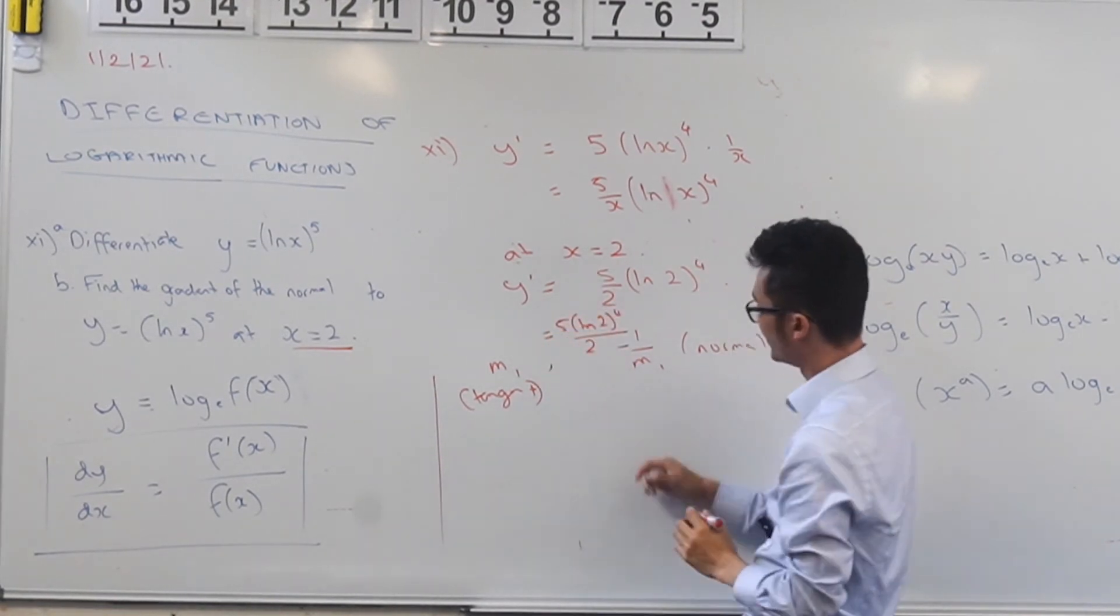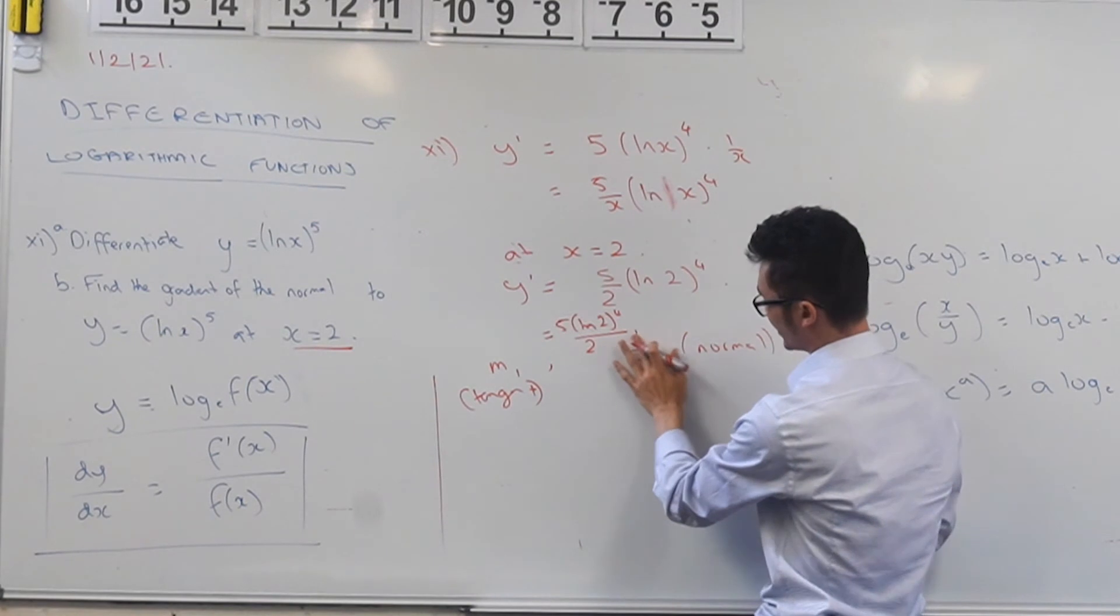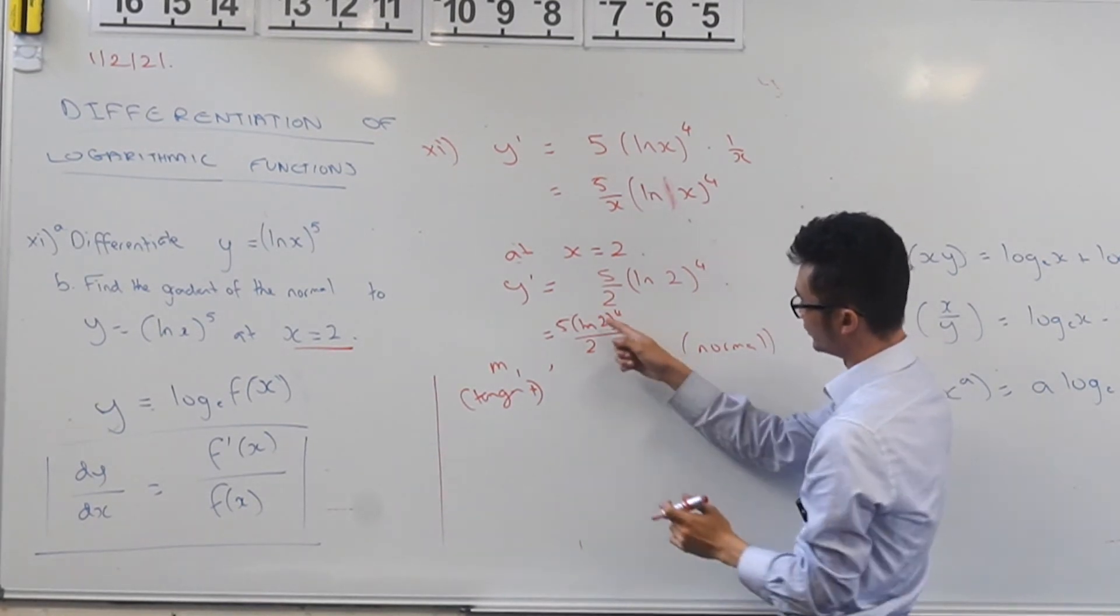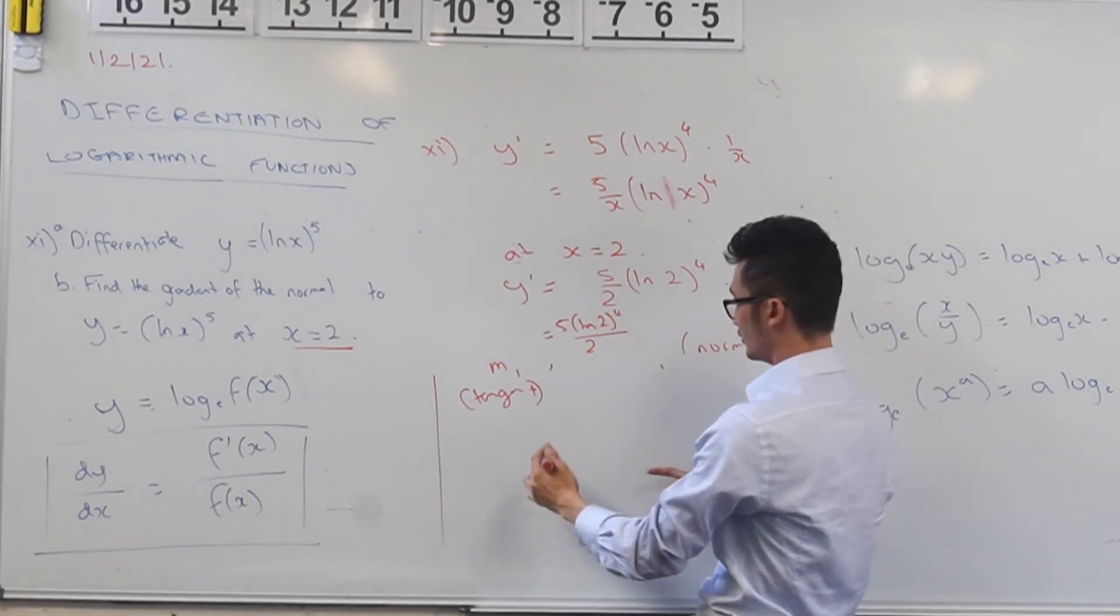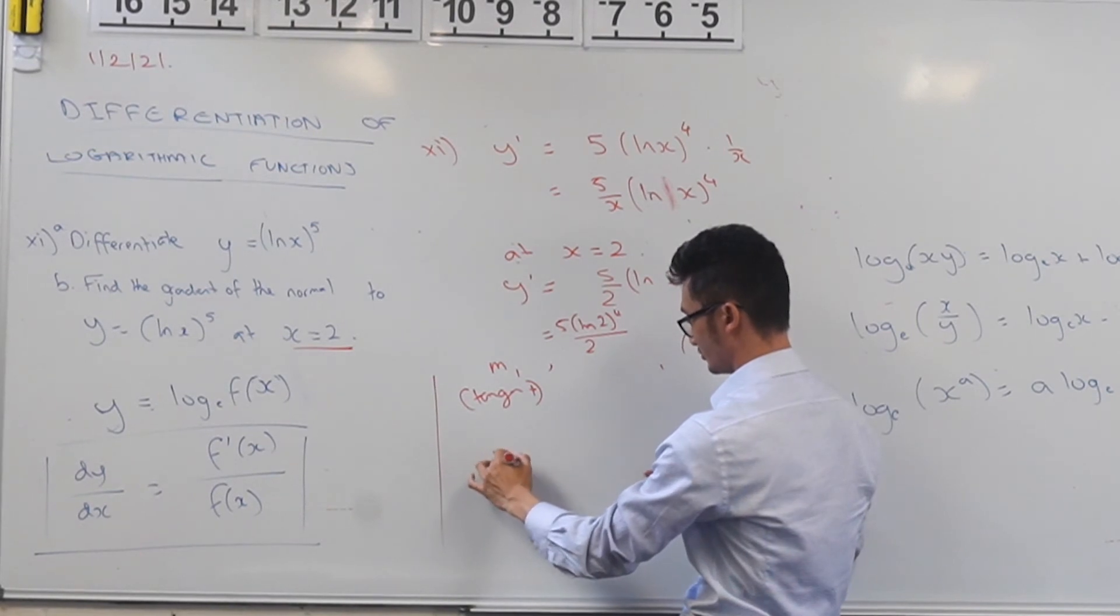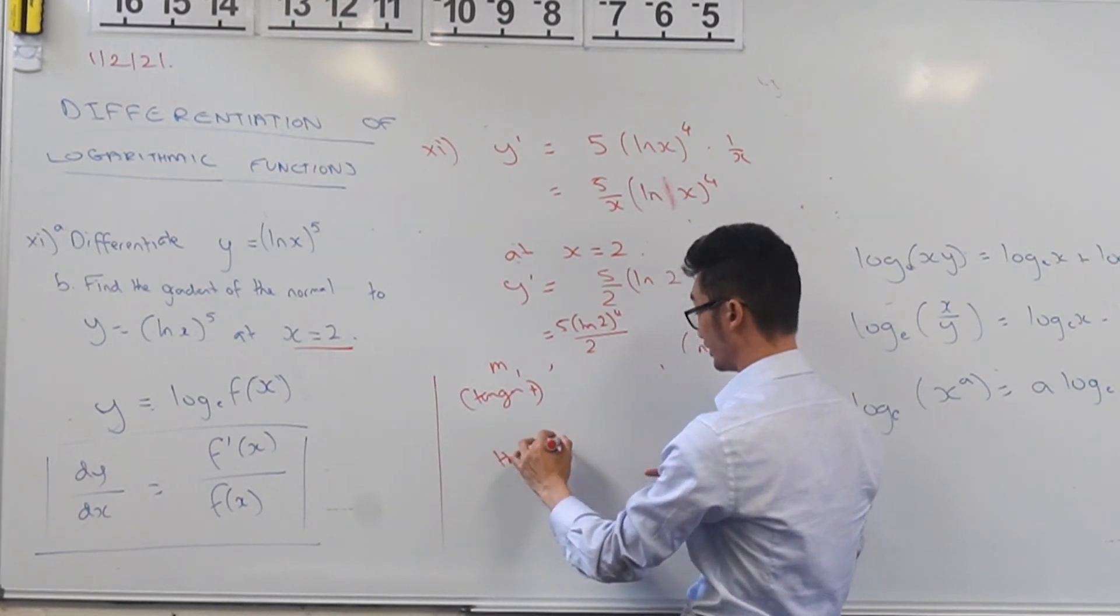Like that, then you can see that there's one clear fraction here, right? We've got 5 ln 2 to the power of 4 over 2, and so the normal, the gradient of the normal, I should say.